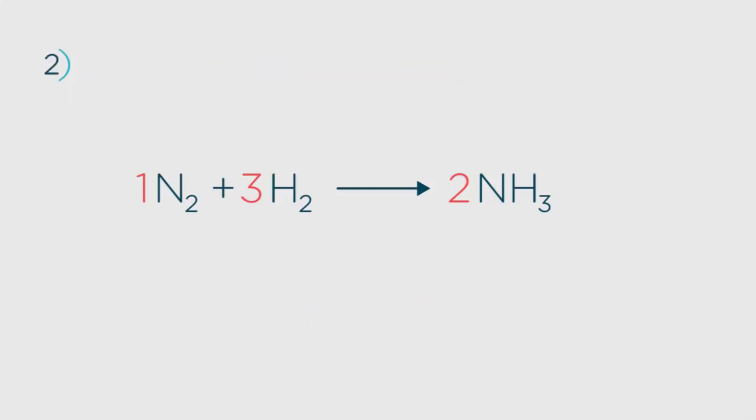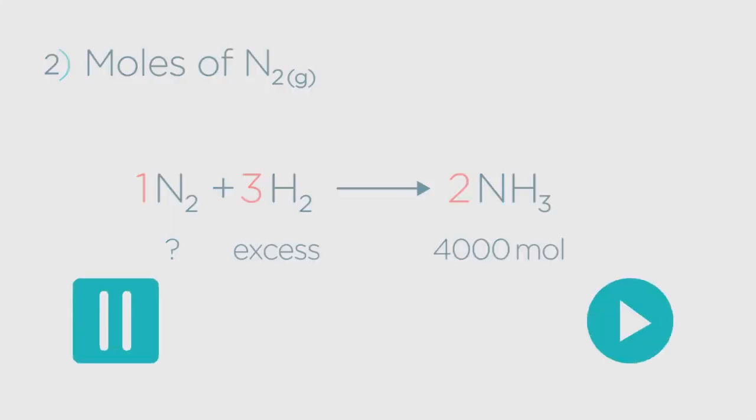Can you work out how many moles of nitrogen gas were used to make the 4,000 moles of ammonia? Pause again and resume when you have the answer.